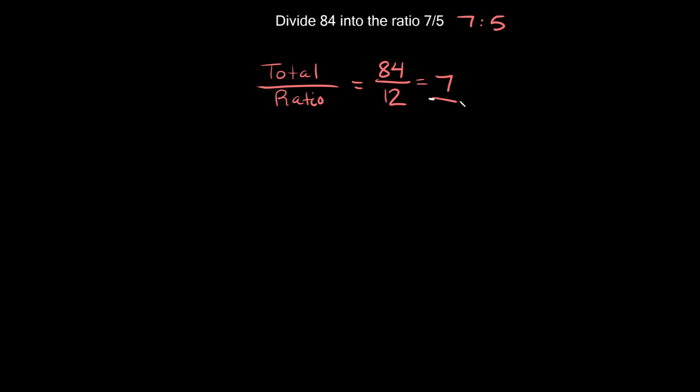So again what we're going to do with this number right here is just multiply it by the original ratio. So the original ratio again is 7 to 5. So here we're going to take this 7, so we're going to say 7 times 7 on this side, and 7 times 5 on the right side.